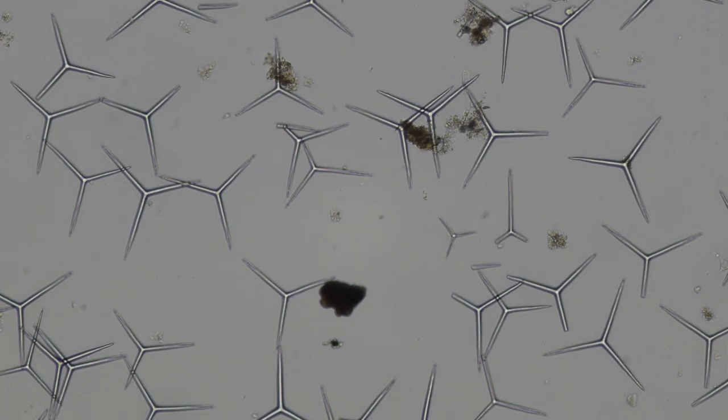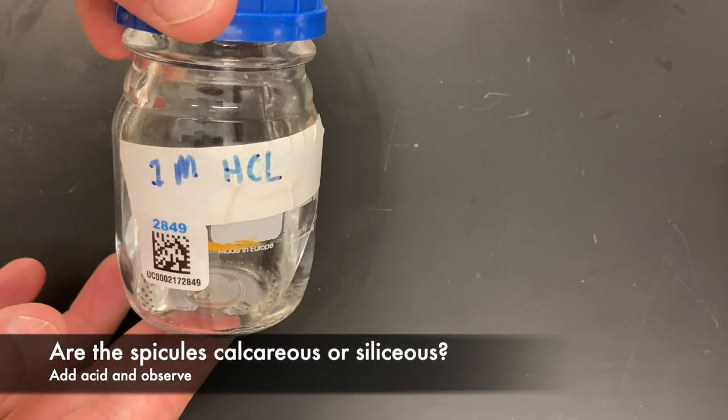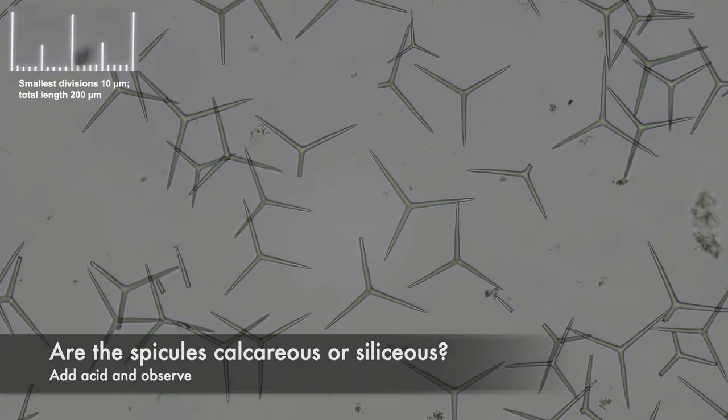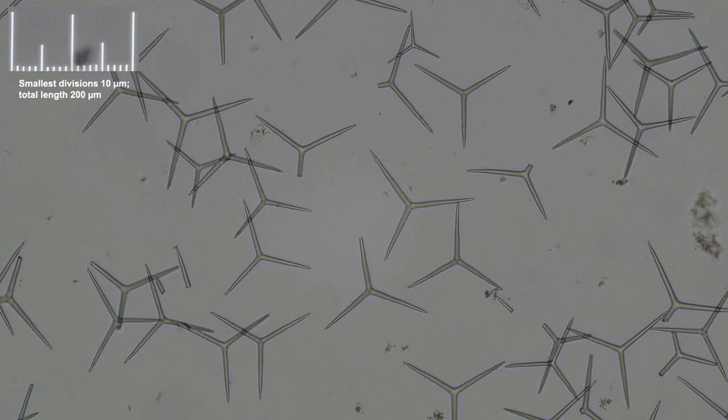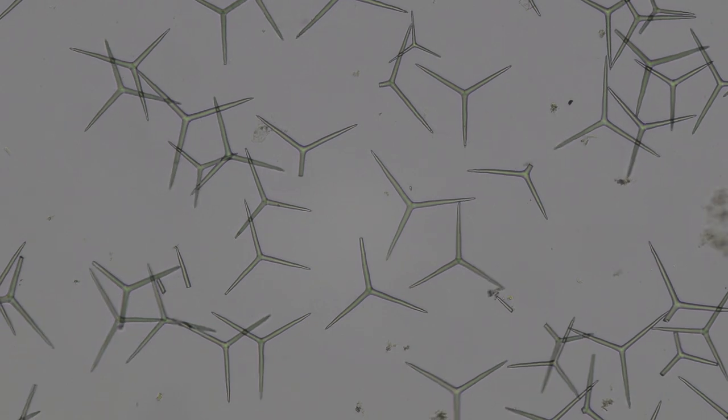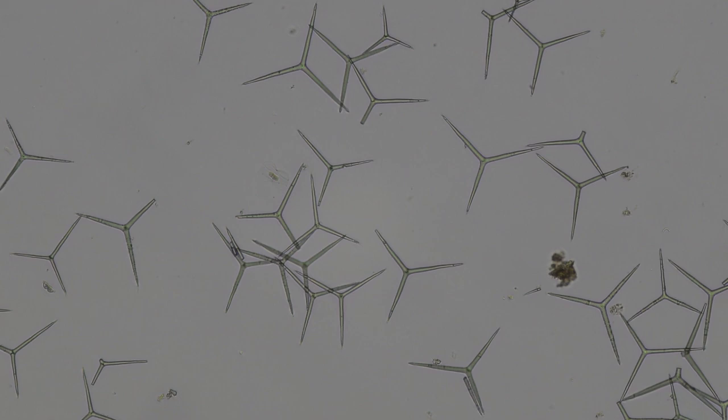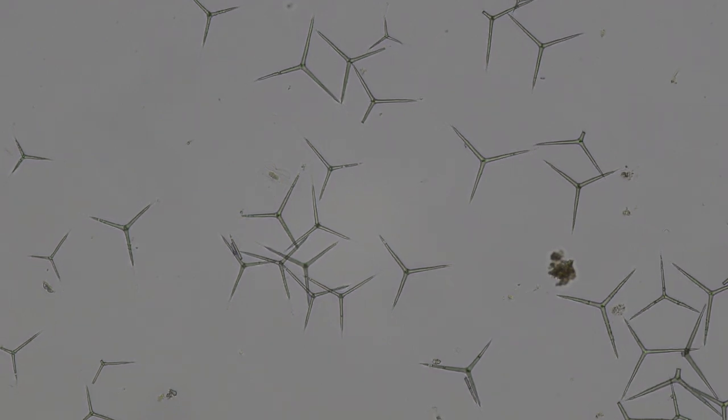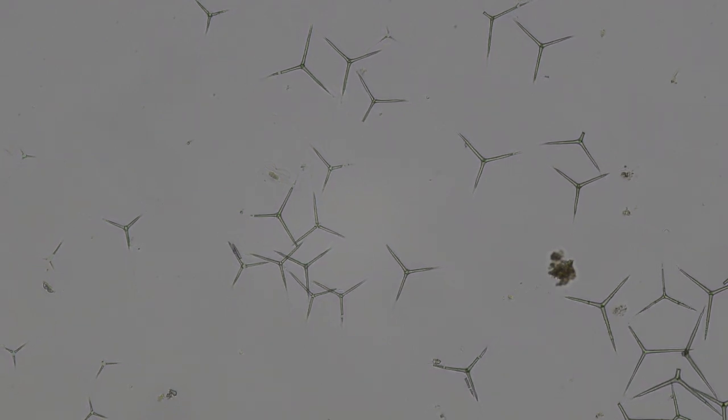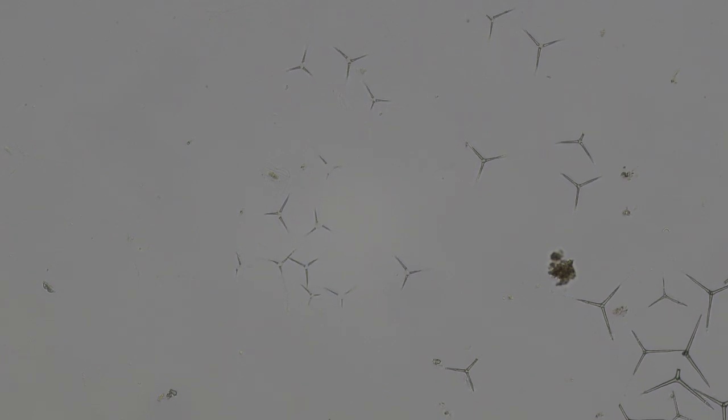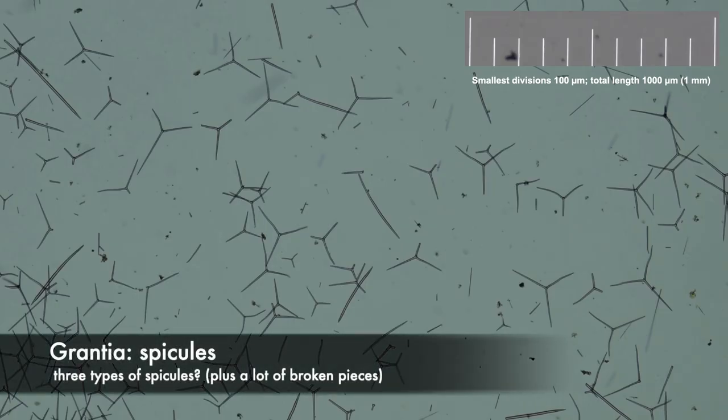To determine if spicules are siliceous or calcareous, there's an easy test. You lower the pH of the solution. Calcium carbonate dissolves in acidic conditions, which gives off CO2. Siliceous spicules are fine at low pH, so nothing happens to them. Here's when I added a drop of acid to these spicules of Leucosolenia, and you can see what happens to them.